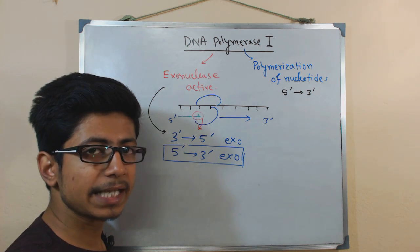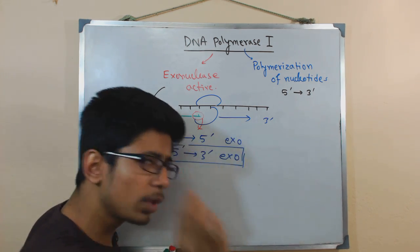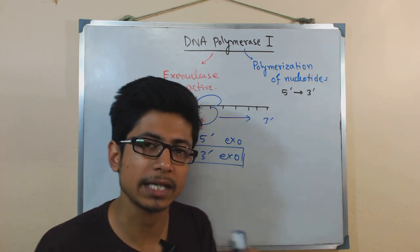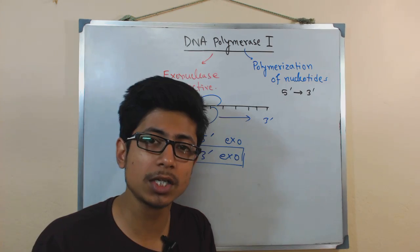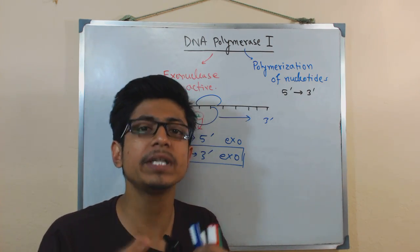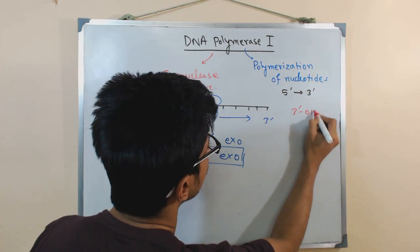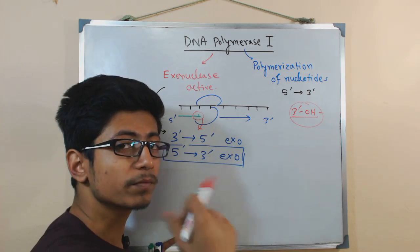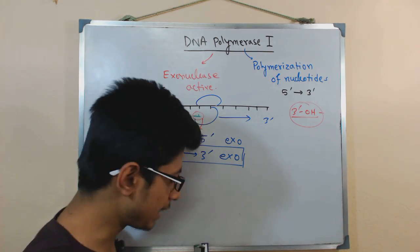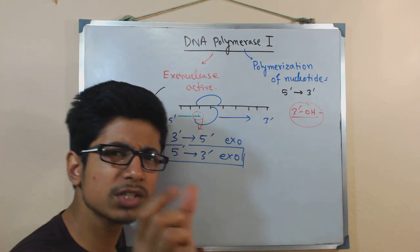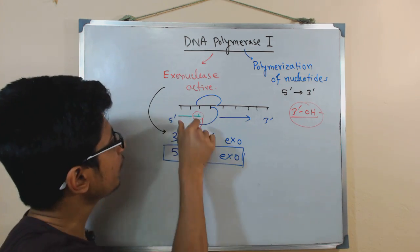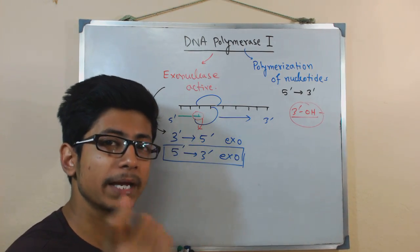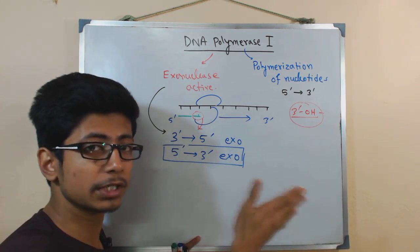DNA Polymerase I is actually used for replacing the RNA primer. Remember, DNA synthesis will not start unless it has an RNA primer, because DNA polymerases cannot initiate DNA replication without a free 3-prime hydroxyl group. To synthesize that 3-prime hydroxyl from scratch, another enzyme is required — the primase. Primase synthesizes a small stretch of RNA first during the DNA replication process to provide the 3-prime hydroxyl, and that RNA stretch is called the RNA primer.